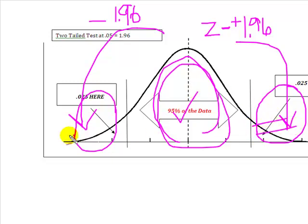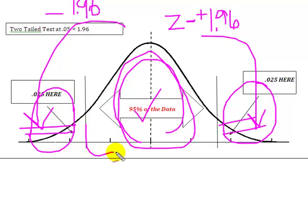Always remember, your tails, whether they're one of them or two of them, are the bad place to be. The only place you want to be is in the middle of the curve. Alright, I'll be back soon. Hope this helps.